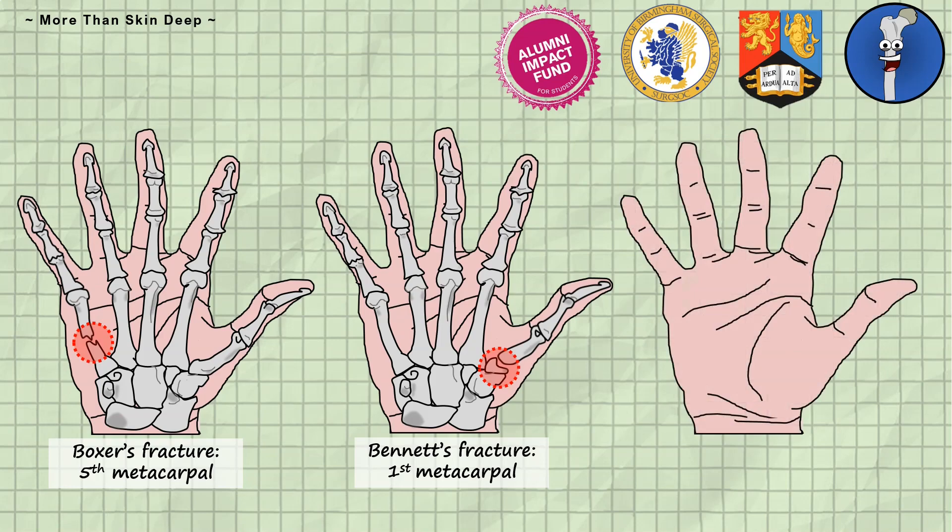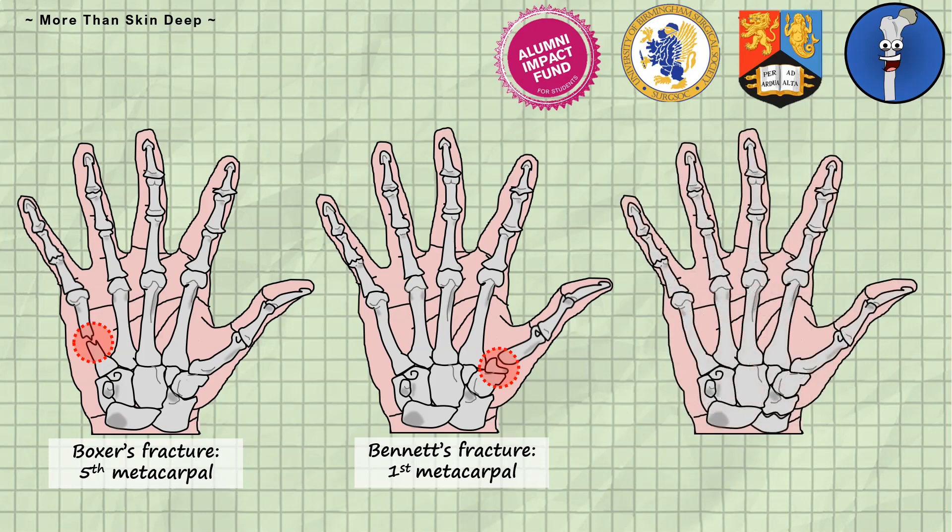Finally we have scaphoid fractures. These fractures occur following high energy impact usually during a fall on an outstretched hand. They're most common in men aged 20 to 30 years.